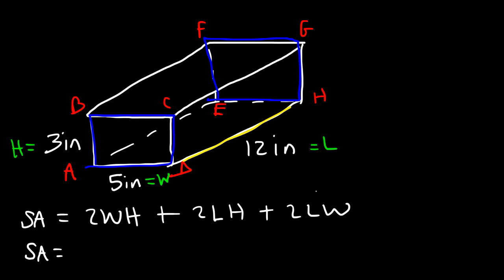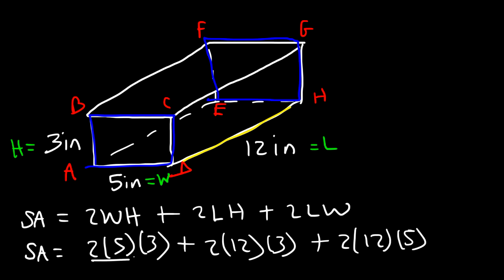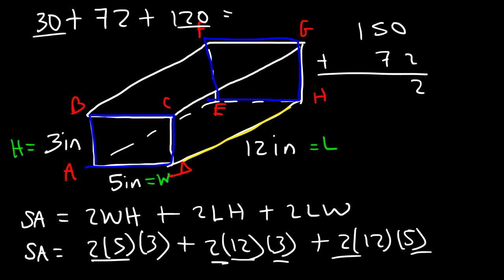Now that we have the equation, we can find the total surface area. So it's 2WH, or 2 times 5 times 3, plus 2LH, that's 2 times 12 times 3, plus 2LW, 2 times 12 times 5. So 2 times 5 is 10, and 10 times 3 is 30. Now 2 times 3 is 6, and 6 times 12 is 72. 2 times 5 is 10, 10 times 12 is 120. Now 30 plus 120 is 150, and now let's add 150 with 72. 5 and 7 is 12.